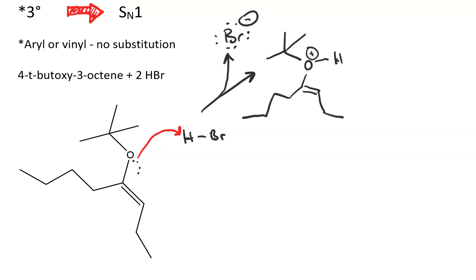But the next step is going to be SN1 where the alcohol leaves to produce an enol and a tertiary carbocation.